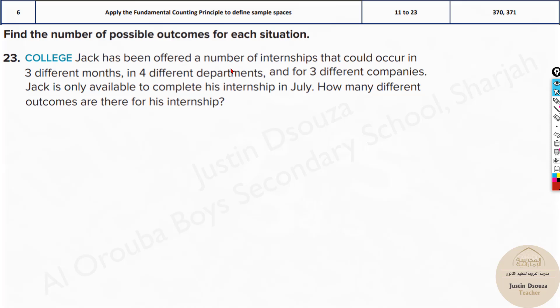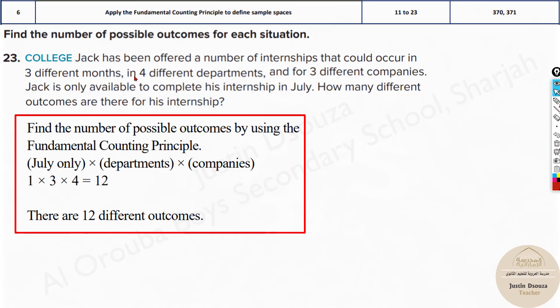Jack has been offered a number of internships that could occur in three different months, in four different departments and for three different companies. Jack is only available to complete his internship in July. How many different outcomes are there for his internship? Here the thing is three different months, but he is only there for one month. So this will not be used. It's one multiplied by four times three. So the month becomes only one, departments are four, companies are three. The answer is twelve.